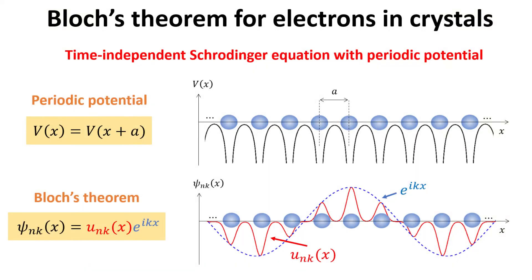Bloch's theorem is a general statement about the shape and symmetry of the wave function of electrons in a periodic potential, such as in crystalline solids. Its importance in modern materials science cannot easily be overstated.